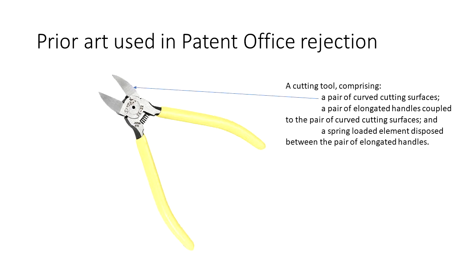Curved cutting surfaces? Check. Elongated handles? Check. Spring-loaded element between the handles? Check. It matches up pretty well. So for that reason, the patent office issues a rejection.